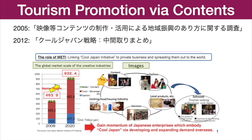Then in 2012, the Cool Japan initiative Midterm Report extended the strategy to inbound tourism. Originally, the Cool Japan strategy was about selling more cultural products to international markets. Note how the diagram on the slide, which was produced by the Ministry of Economy, Trade and Industry (METI), sees the sale of Japanese pop culture content to foreign consumers as a means of attracting inbound tourists to Japan.